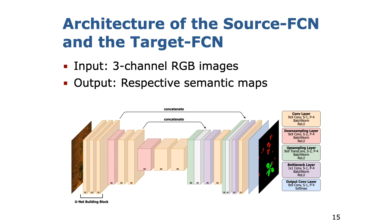The source FCN and the target FCN share the same network architecture. They take RGB images as input and output respective semantic segmentation maps, encoding a pixel-wise classification into crop, weed and soil. The network architecture incorporates five fully convolutional building blocks based on the UNET architecture.